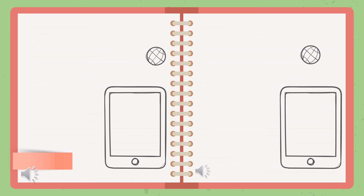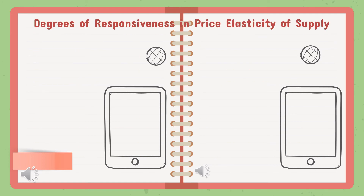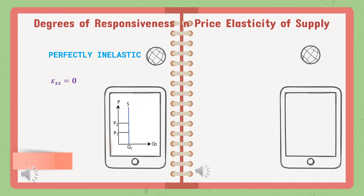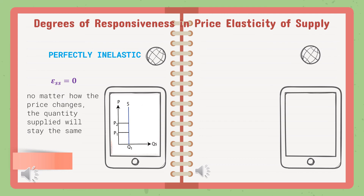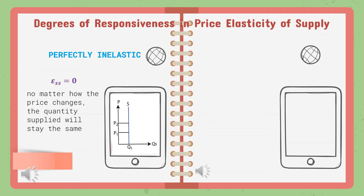Degrees of responsiveness in Price Elasticity of Supply are determined by looking at the shape and slope of the supply curve. There are five degrees. First, Perfectly Inelastic occurs when elasticity of supply equals 0 — no matter how the price changes, the quantity supplied stays the same. For example, if the price of land increases, the quantity supplied stays the same because land is a very limited resource.